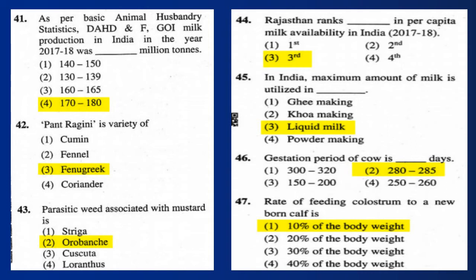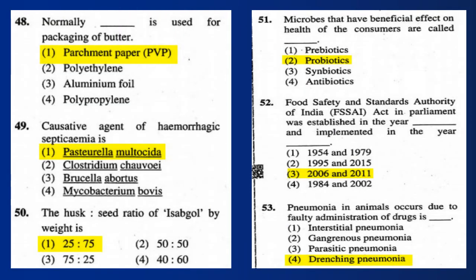Question 47: Retro feeding of colostrum to a newborn calf is 10% of the body weight. Question 48: Normally parchment paper is used for packaging of butter.